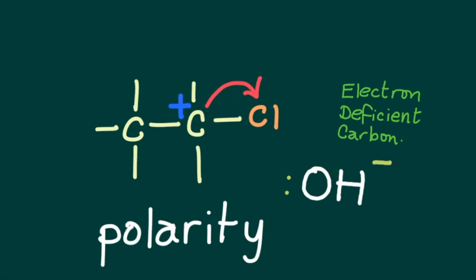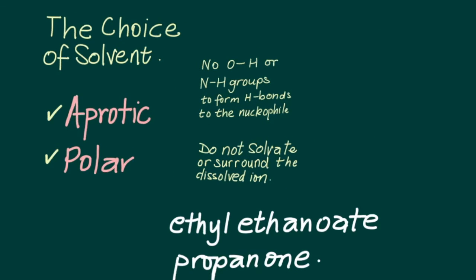The choice of solvent in this nucleophilic substitution reaction is important and it is essential to have an aprotic polar solvent. An aprotic solvent would ensure that no OH or NH groups are available to form hydrogen bonds to the nucleophile and cannot solvate or surround the nucleophile, which is the OH with its lone pair. Good solvents that are aprotic and polar include ethyl ethanoate and propanone.